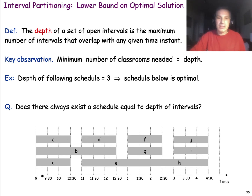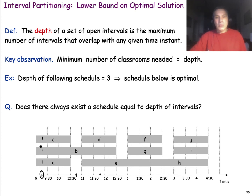At this time instant, for instance, we have three intervals that overlap. Here we have only one. Here we have three again. If you go across time, you can find the maximum number of intervals overlapping at any time instant. In this example, the depth is equal to three.